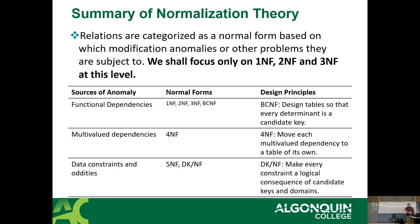Relations are categorized into normal forms based on which modification anomalies they resolve. For this course, we only worry about the first three normal forms. There's also BCNF — Boyce-Codd Normal Form — known in the industry as 'normal form three and a half' because it sits between 3NF and 4NF. Beyond that there's fourth, fifth, DK/NF, sixth, seventh, eighth... but we only worry about one, two, and three for this course.